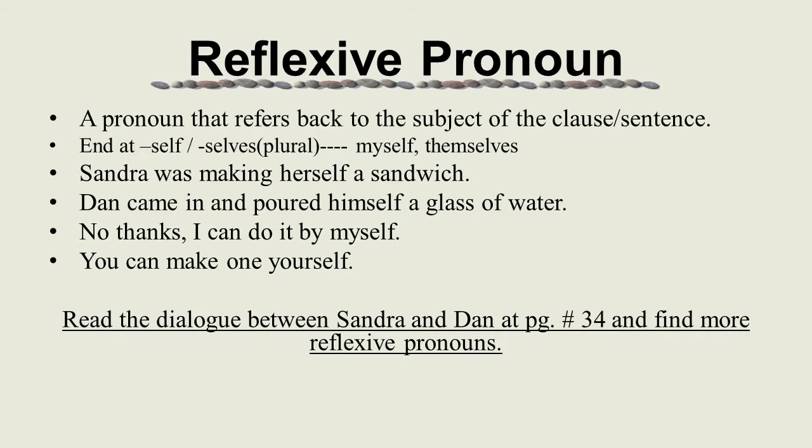At page number 34 of your book, there is a dialogue between Sandra and Dan. Read the dialogue and find the reflexive pronouns. I have done some for you. First sentence: Sandra was making herself a sandwich — 'herself' refers back to Sandra, so it is a reflexive pronoun. Dan came in and poured himself a glass of water — 'himself' refers back to Dan. 'I can do it myself' — 'myself' refers back to I. 'You can make one yourself' — 'yourself' refers back to you. Find more examples in the dialogue.